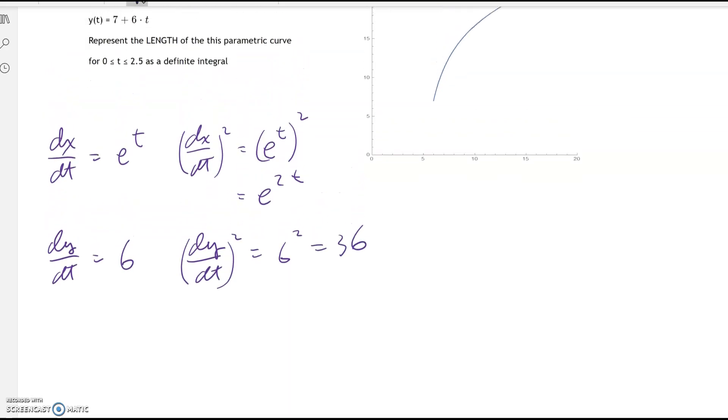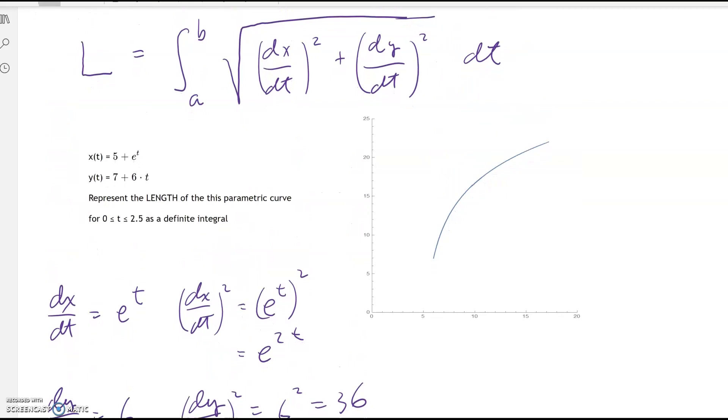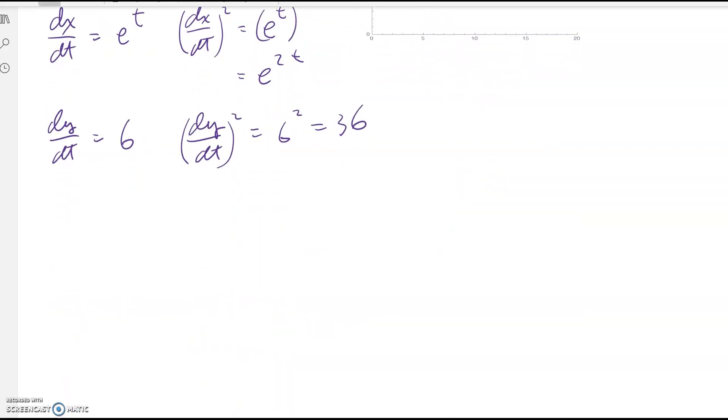So now back to the formula, I've got the derivative squared plus derivative squared, and my integral boundaries are from 0 to 2.5. So integral 0 to 2.5 of the square root of e^(2t) plus 36 dt. That's the setup, and that was part A.